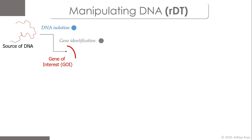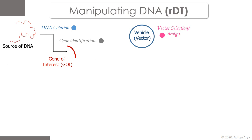In parallel to isolating the gene of interest, we also develop another piece of DNA for recombinant DNA technology. This second piece generally comes from sources like bacterial plasmids or viral vectors — collectively known as vehicles or vectors. The vector is mainly required to make the foreign DNA compatible within the host, and selection or design of the vector is a critical step.